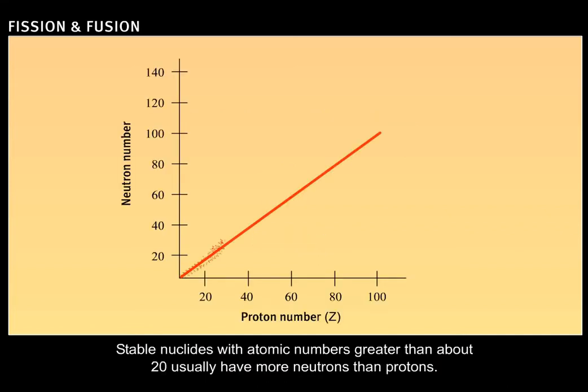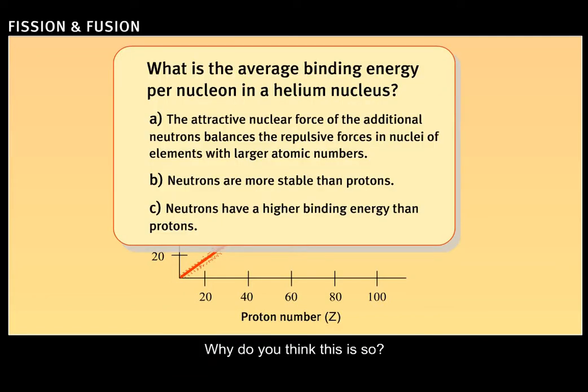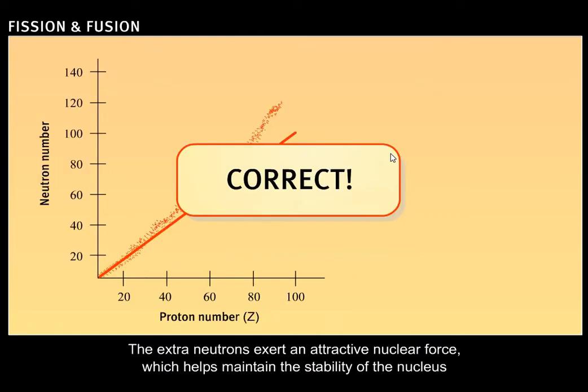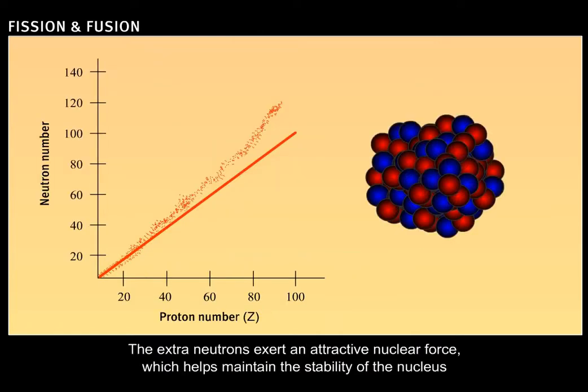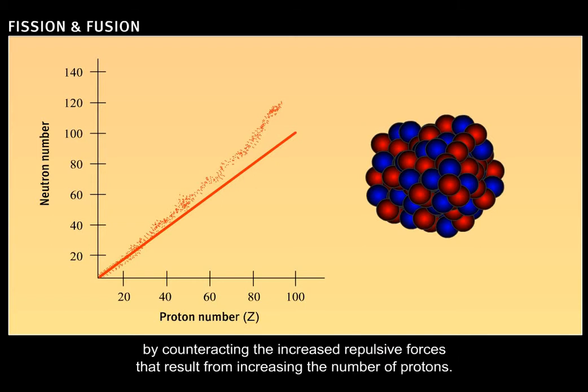Stable nuclides with atomic numbers greater than about 20 usually have more neutrons than protons. Why do you think this is so? Correct. The extra neutrons exert an attractive nuclear force, which helps maintain the stability of the nucleus by counteracting the increased repulsive forces that result from increasing the number of protons.